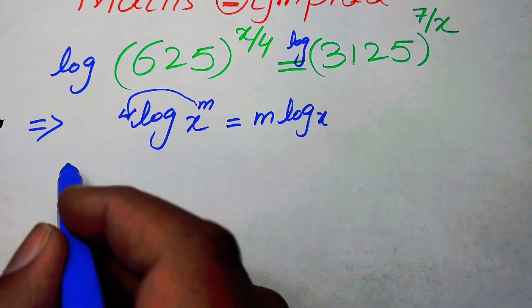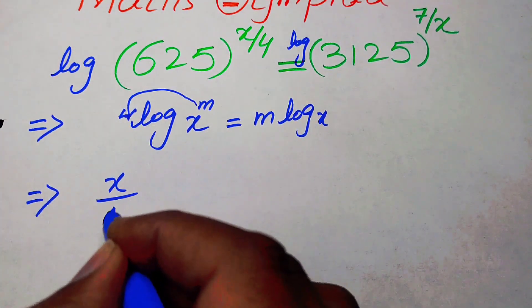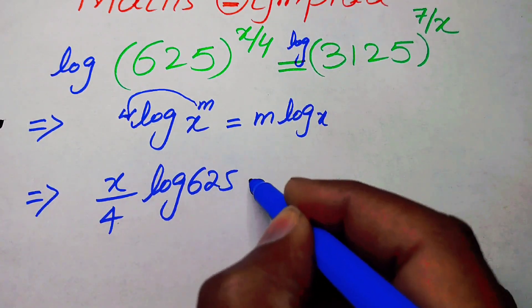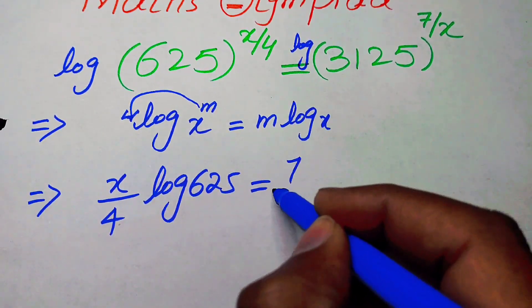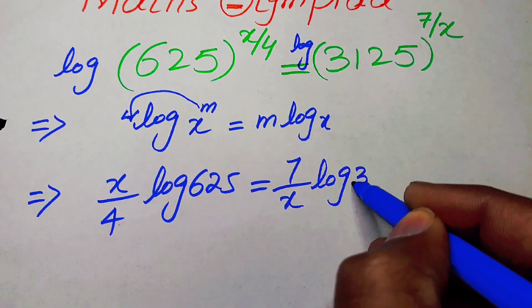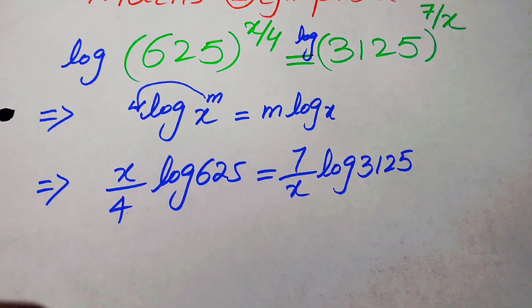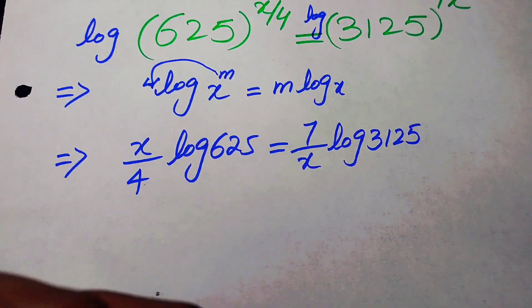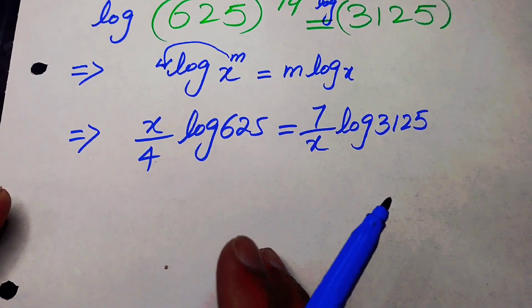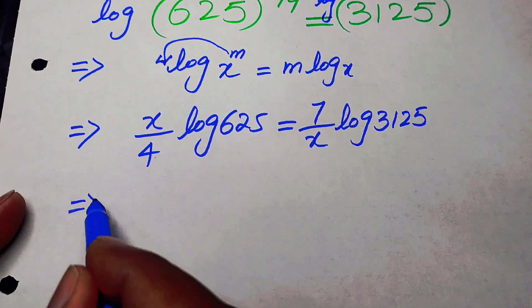We write the given expression as x over 4 times log 625, equal to 7 over x times log 3125.